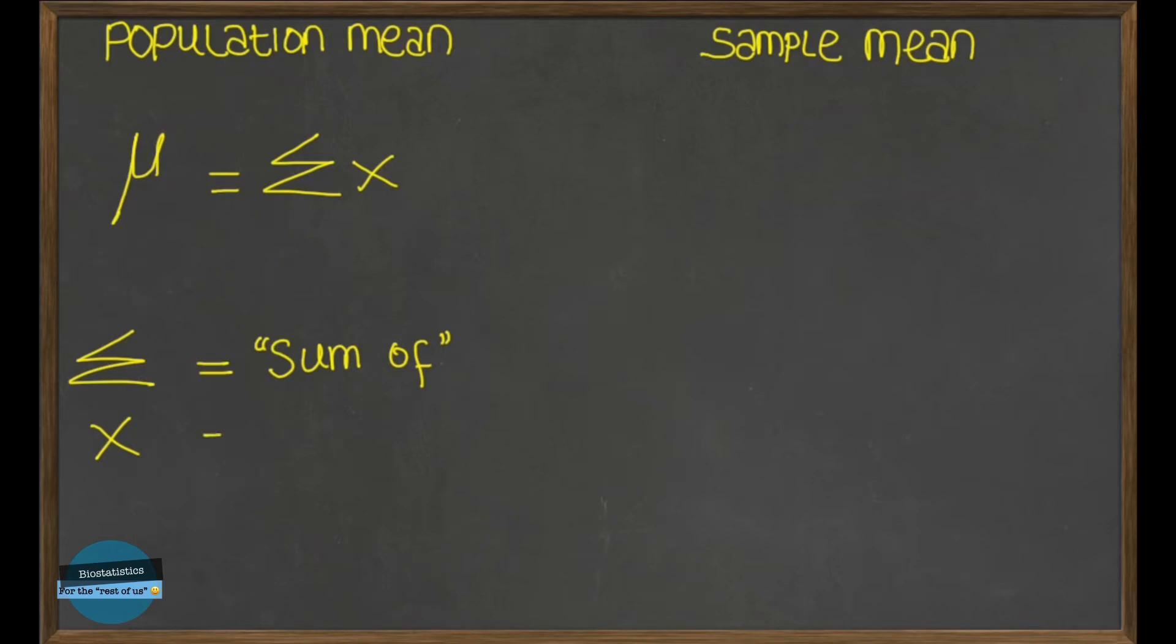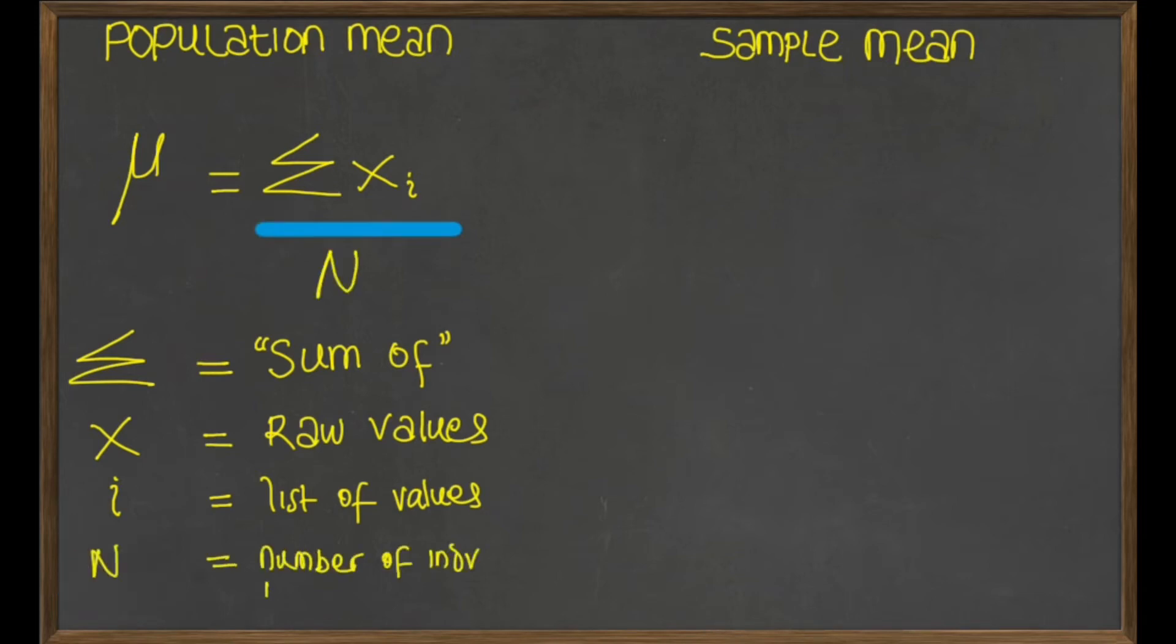Now, in statistics, x is used to represent the raw scores of any variable or the raw data values collected. So in our own example, x is the raw height of the individuals in the population. We usually like to write the list of values as i. So you will see i added as a subscript. So here we have sigma x subscript i and we now divide by the number of all the individuals in the population, which is represented by the capital letter N.